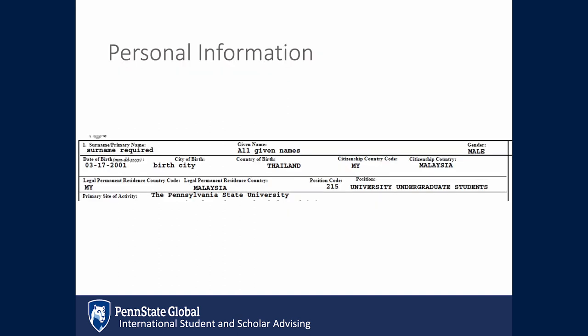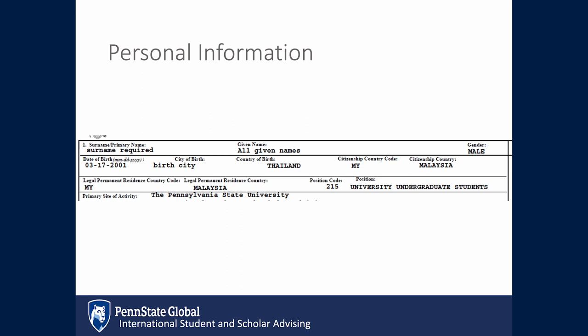Your personal information will be listed at the top. Surname is a required field. The SEVIS ID number is found at the top right of your DS-2019.